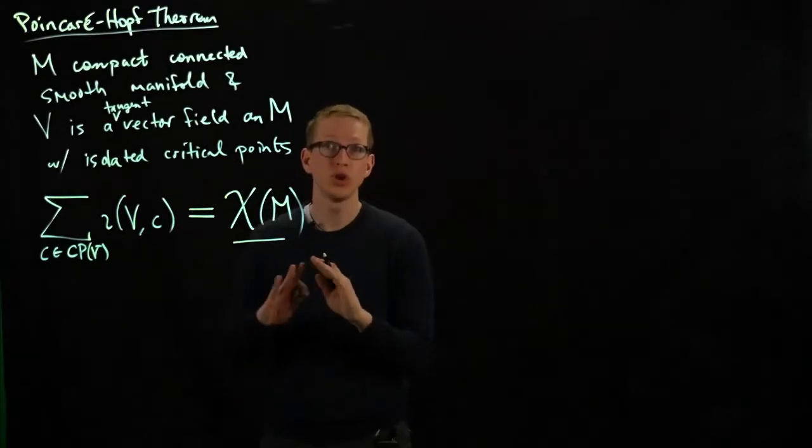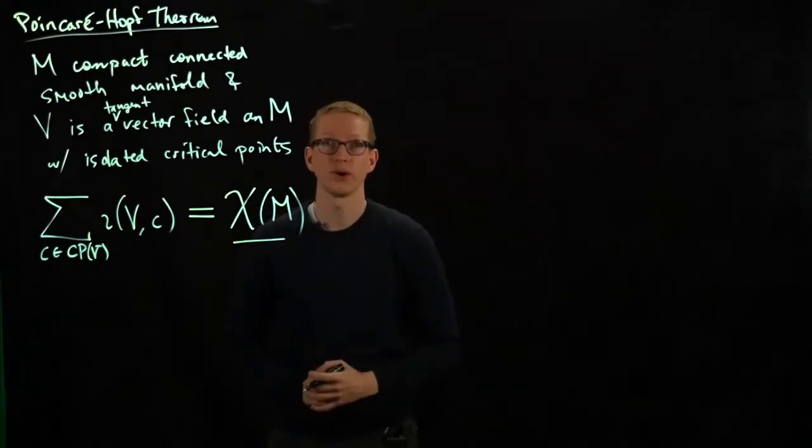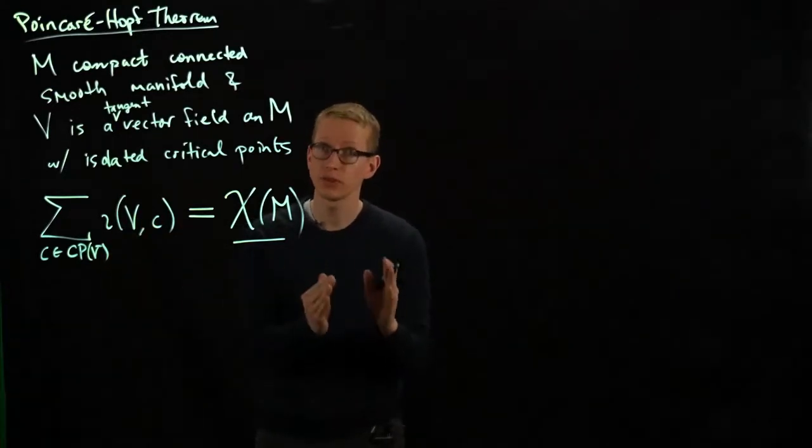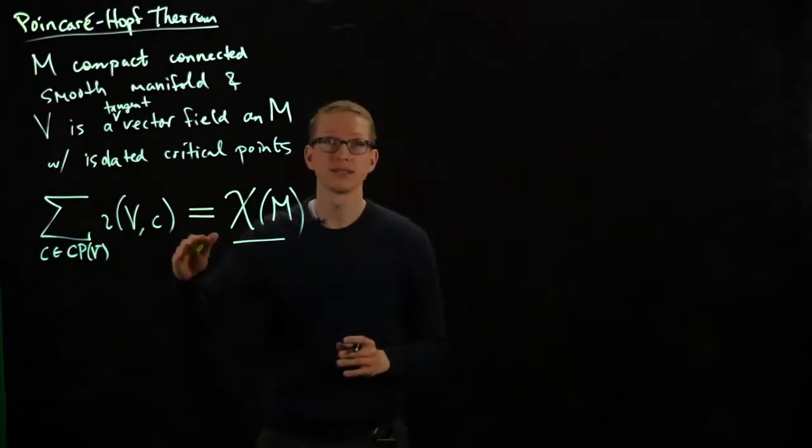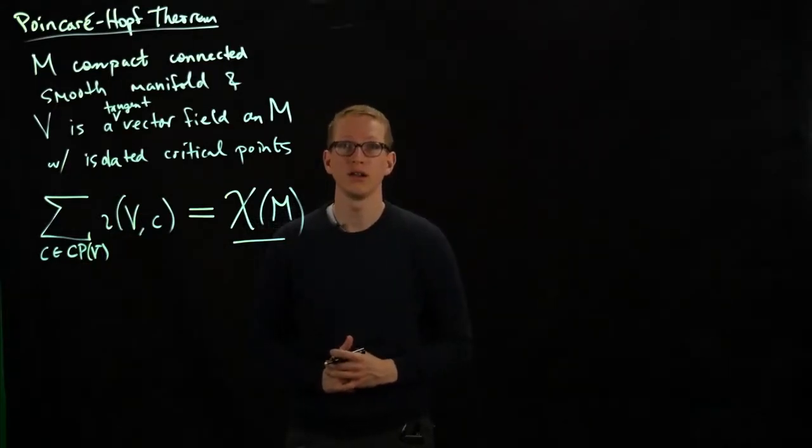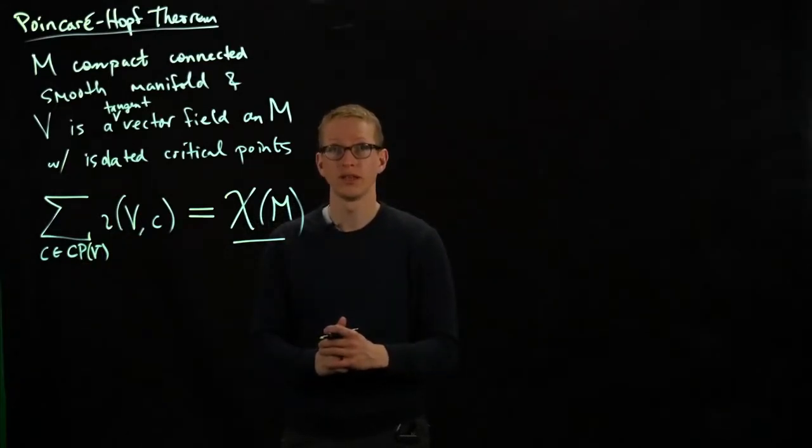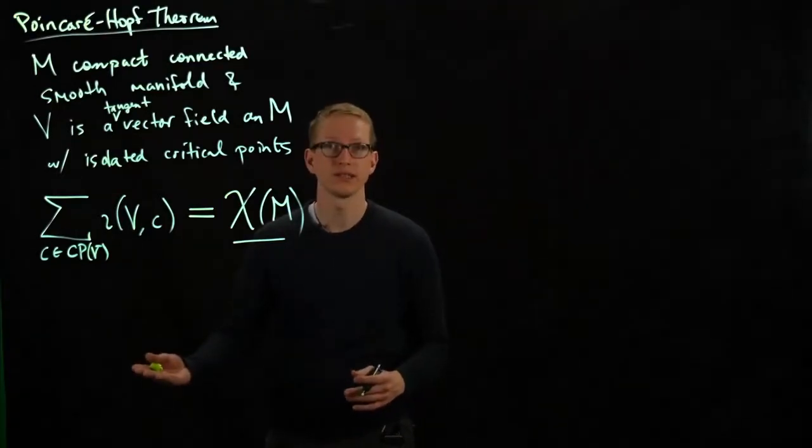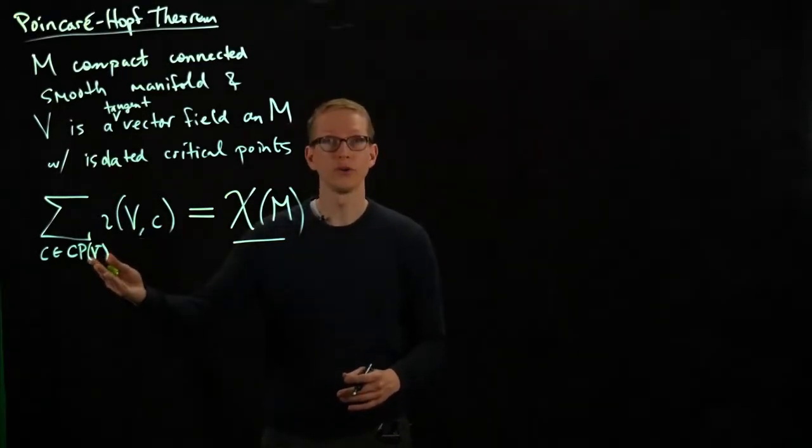There's absolutely no reference to a vector field on the right-hand side, which means that the sum of the indices, not a particular index, but the sum of all of the indices on a manifold with a vector field is independent of that vector field. For any vector field that has isolated critical points, they're always going to be equal.